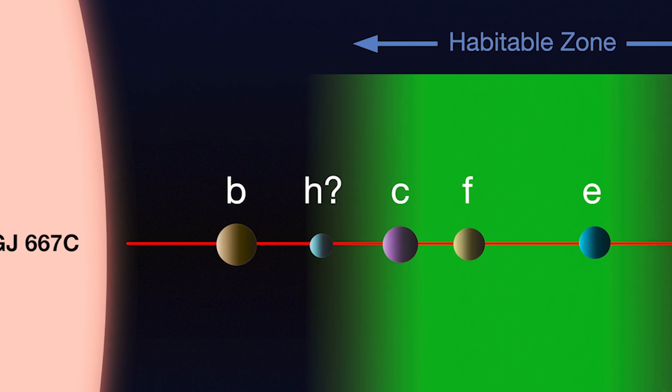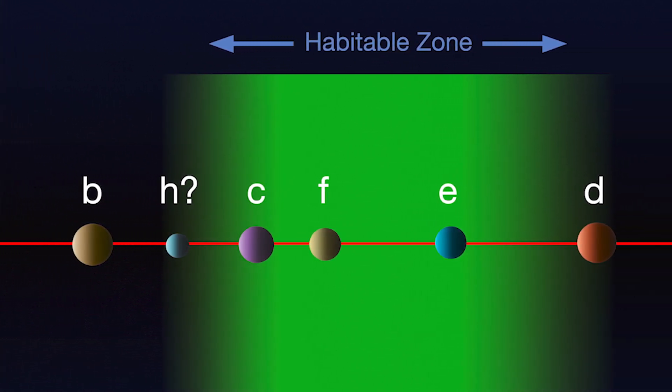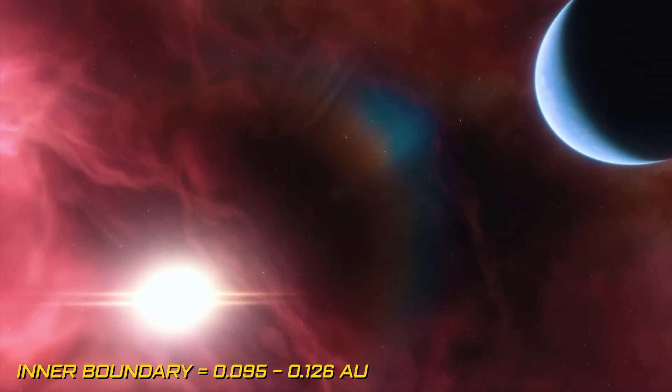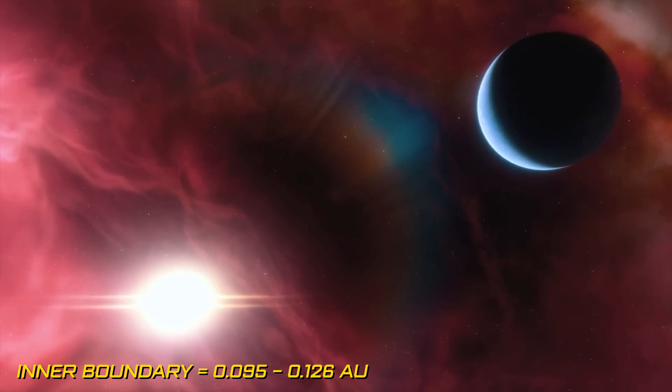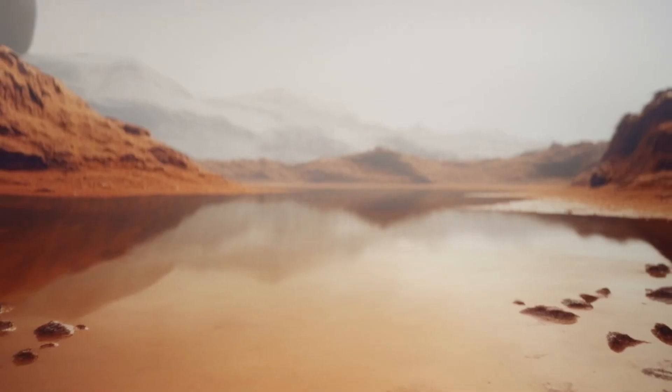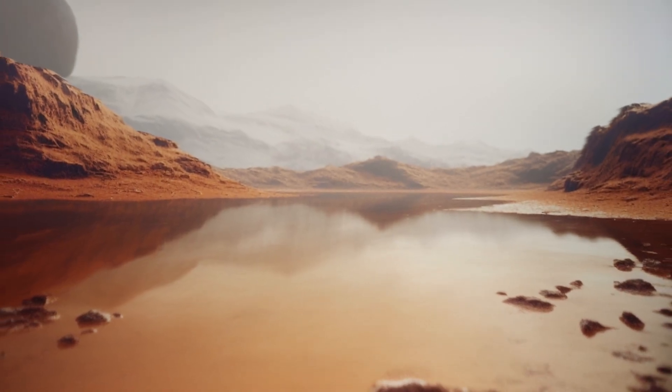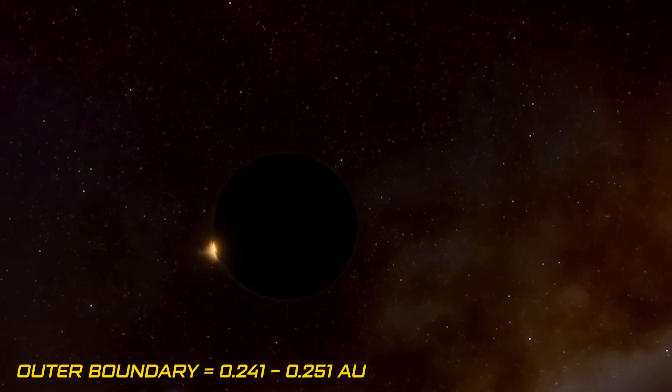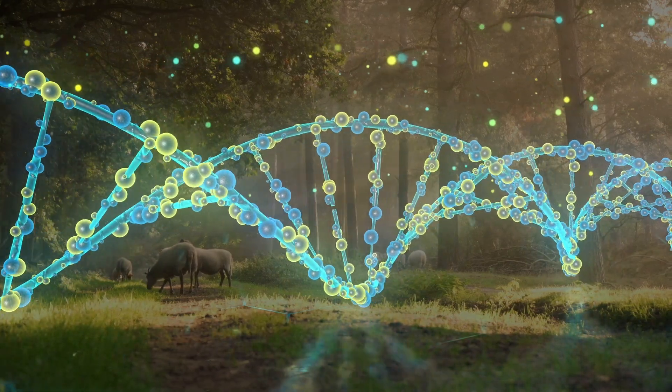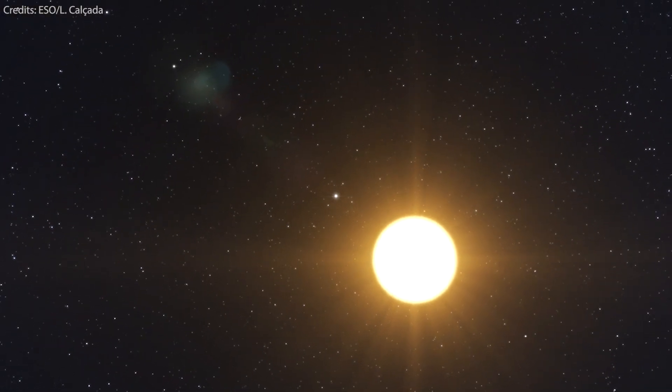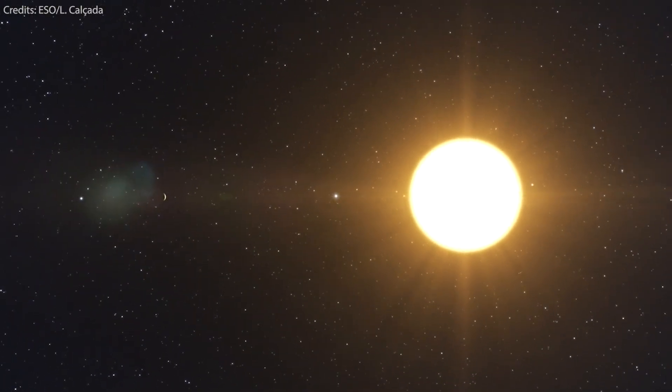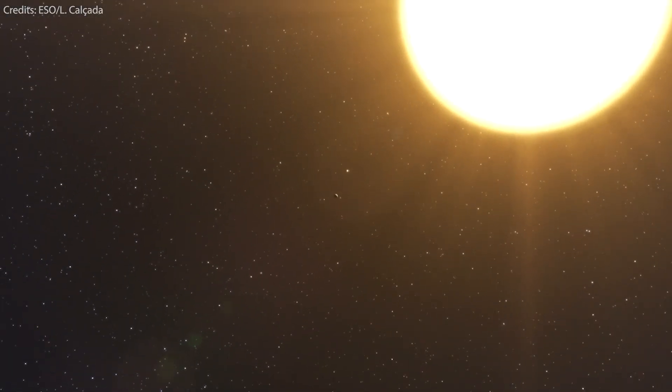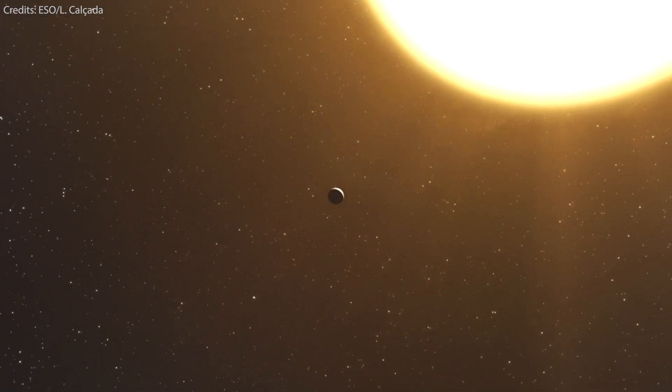However, amidst this cosmic dance, other factors come into play. Scientists have meticulously charted the habitable zone around Gliese 667-C, delineating two critical boundaries. The inner boundary, spanning between 0.095 and 0.126 astronomical units from the star, marks the sweet spot where liquid water could flourish on a planet's surface. Meanwhile, the outer boundary, stretching from 0.241 to 0.251 AU, further defines life-sustaining conditions. In this delicate interplay of stellar forces and planetary dynamics, the stage is set for the emergence of life, each celestial body within the Gliese 667-C system holding the promise of unlocking the secrets of existence beyond our cosmic shores.